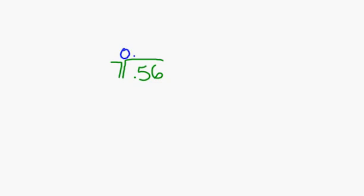Now you see if 7 goes into 5, which it doesn't, so you put a zero above the 5. Then you have to see if 7 goes into 56, which it does — 8 times. So you put an 8 above the 6 in 56, then you subtract 56 from 56 and get zero. So the answer to your problem is 0.08.